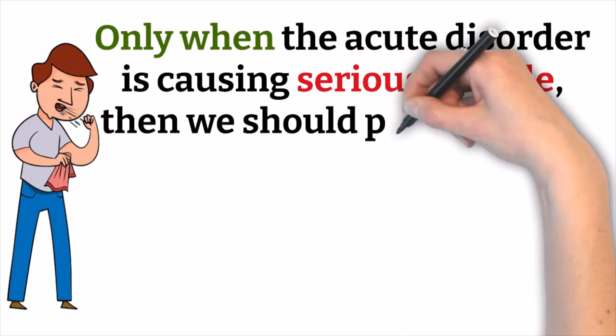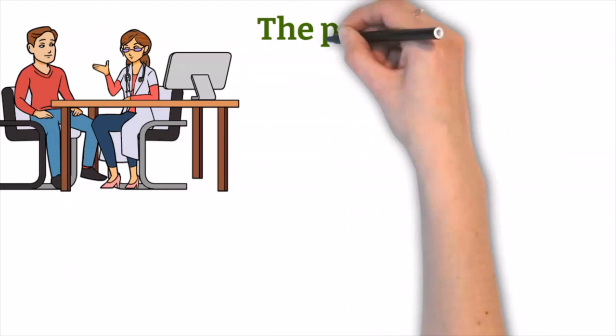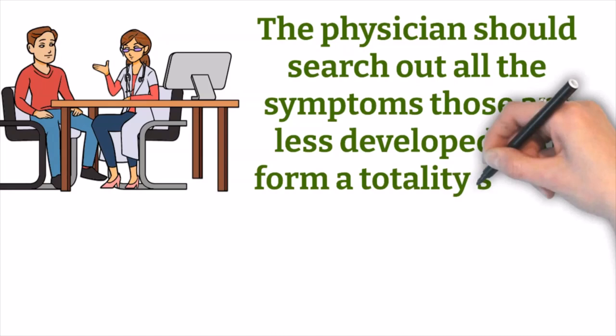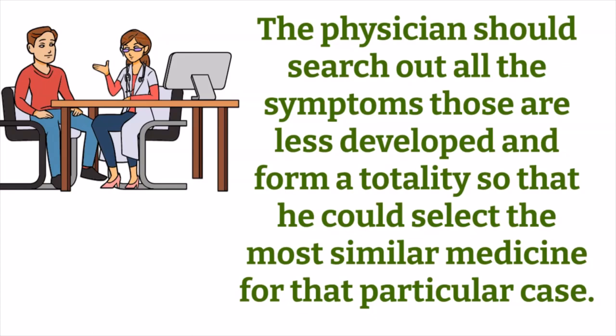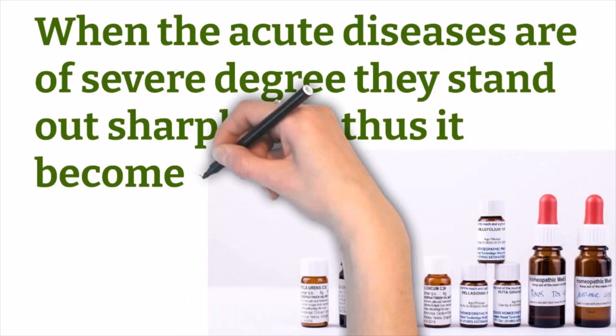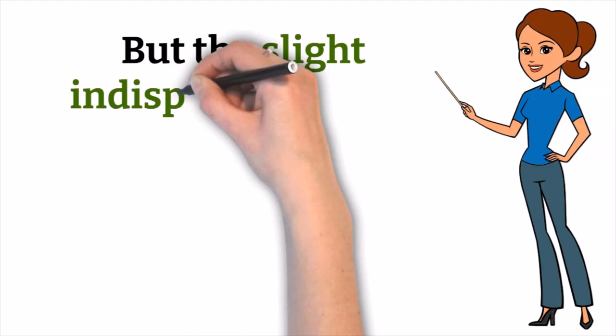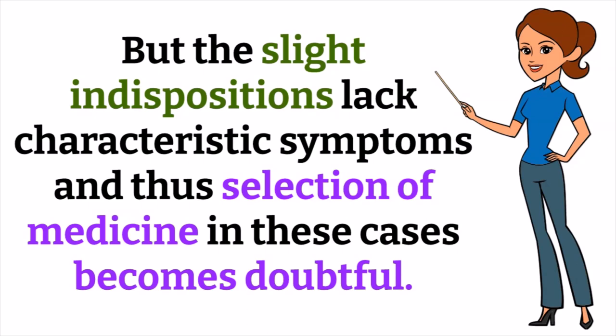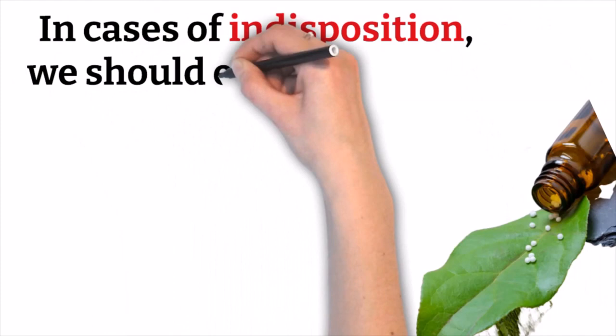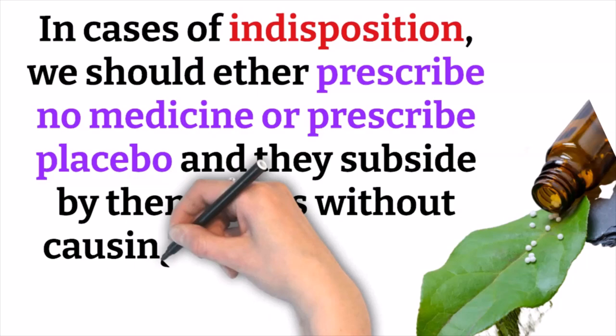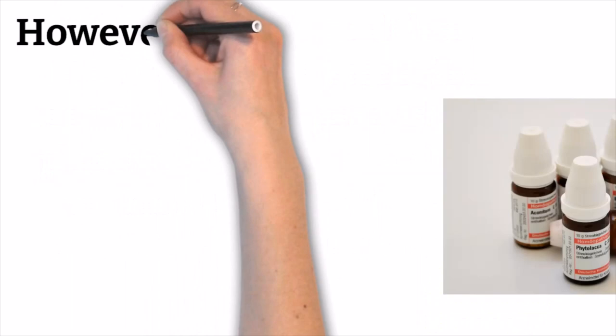Only when the acute disorder is causing serious trouble should we prescribe for these accessory symptoms. The physician should search out all less-developed symptoms and form a totality to select the most similar medicine. Severe acute diseases stand out sharply and make it easier to prescribe, but slight indispositions lack characteristic symptoms, making medicine selection doubtful.